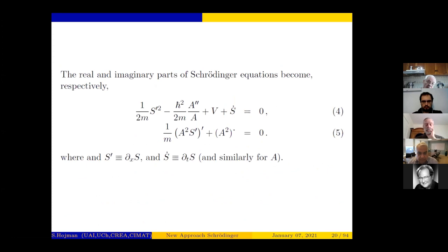Separate the real and imaginary parts of the Schrödinger equations and you get two equations, 4 and 5, where prime denotes the derivative with respect to x and dot the derivative with respect to t.